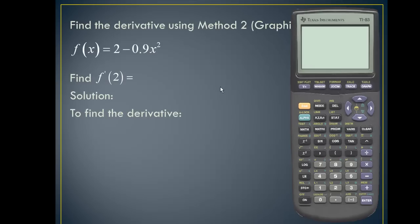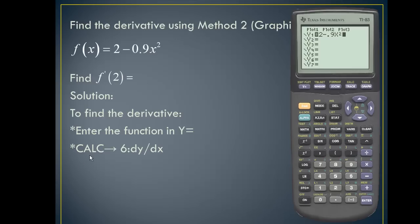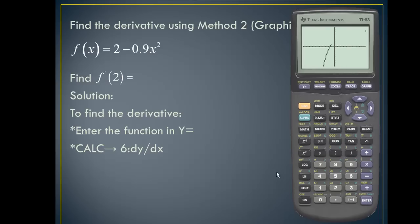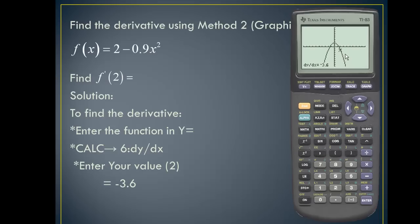Here's the calculator solution. First, we'll enter the function into the Y= editor, so I'll put in 2 minus 0.9x squared. Next, we'll use the calculate function, which is above the trace key — so I'll hit second and trace, which brings up the calculate menu. Our sixth option is the derivative function, so I'll press enter. Notice it gives us a graph. We want to evaluate the derivative at 2, so I'll simply put in the value 2 and press enter. It gives us a slope of negative 3.6.